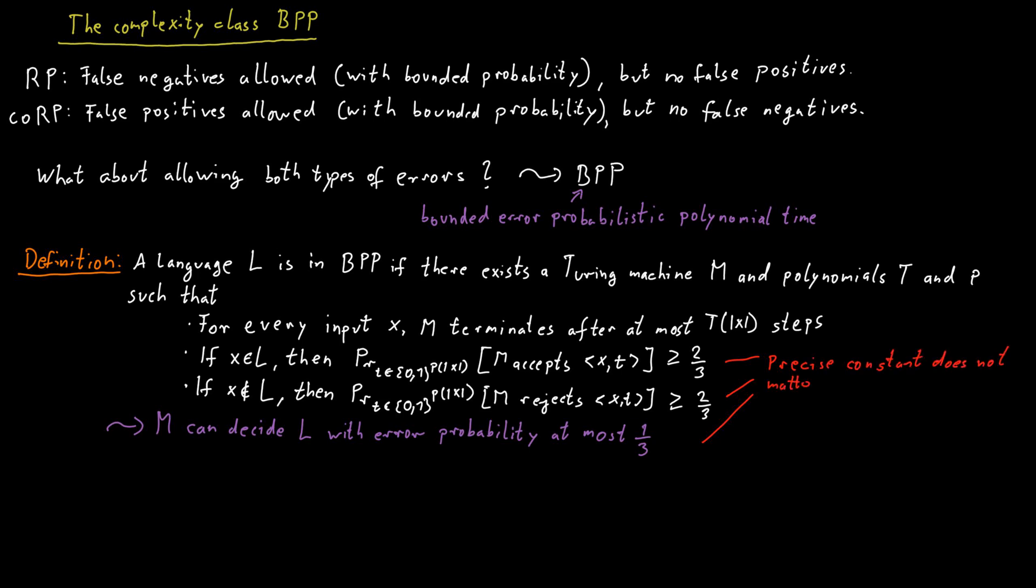Because imagine we would write one-half instead of two-thirds, which would mean we would allow an error probability of up to one-half. In that case, what would this definition really say?